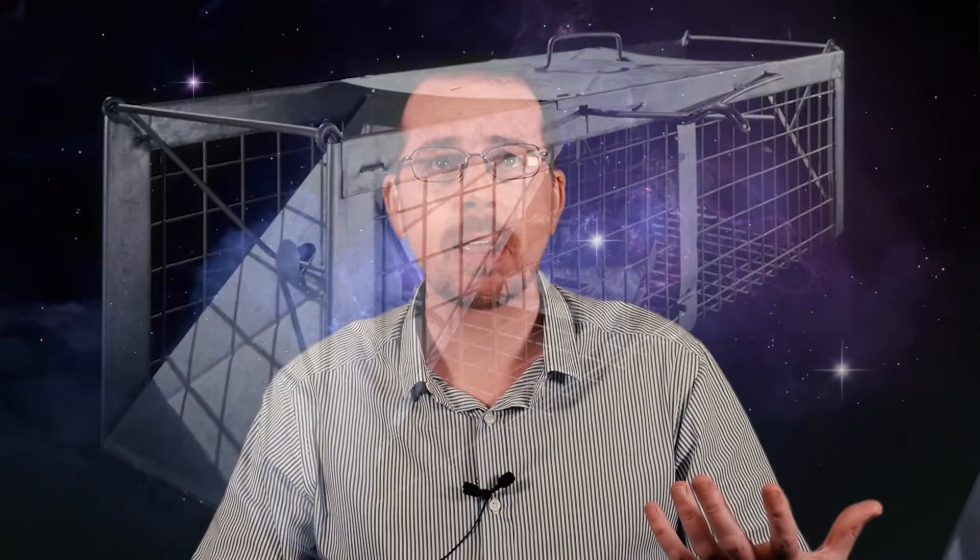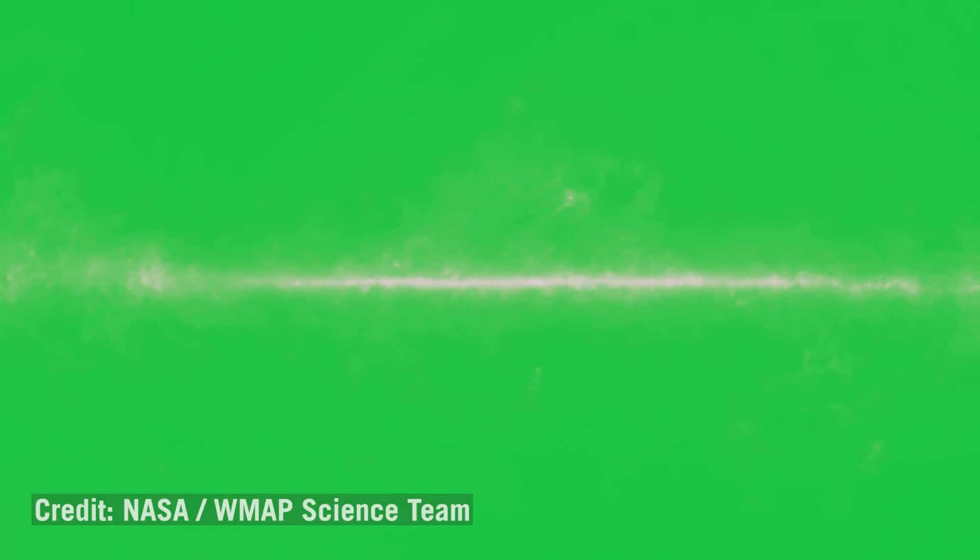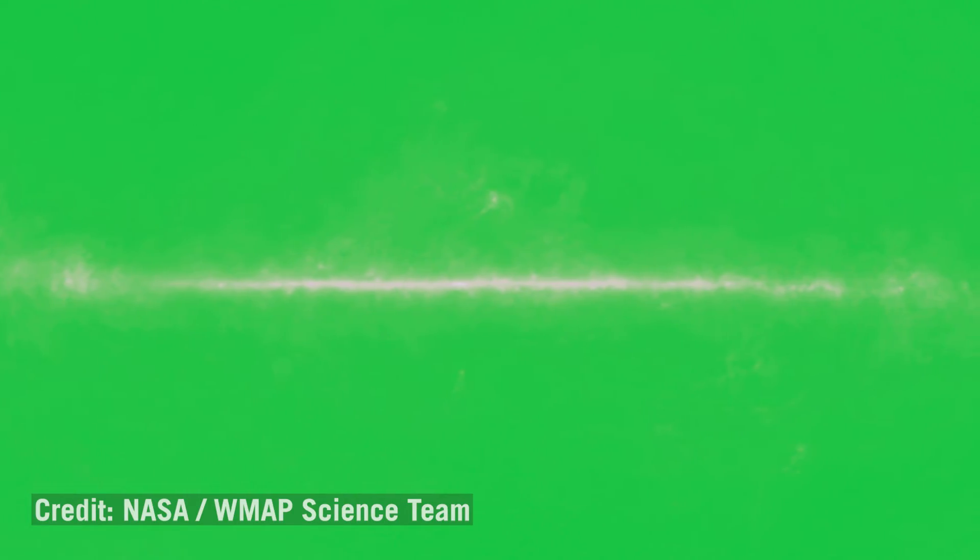And so they realized that maybe they were actually seeing something that came from outer space. And they called the scientists at Princeton University to see if they knew where the signal might be coming from. And immediately the scientists at Princeton realized that they had found the microwave background that they were planning on looking for. And so the two researchers named Arno Penzias and Wilson, they were awarded the Nobel Prize for their discovery. Even though they weren't looking for it, they had the wherewithal to realize that what they saw was important and to figure out what it was.